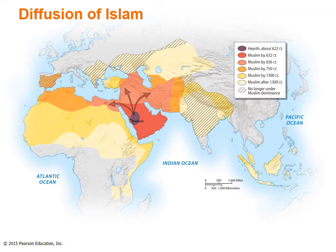The map shows the diffusion of Islam. From Spain to Southeast Asia, Islam's legacy remains strongest nearest its Southwest Asian hearth. In some settings, its influence has ebbed or come into conflict with other religions such as Christianity, Judaism, and Hinduism.